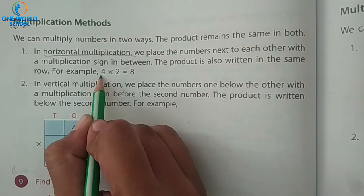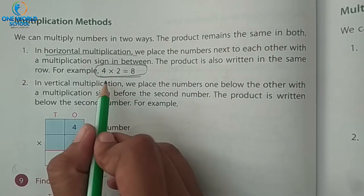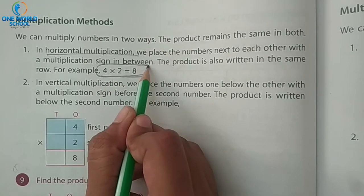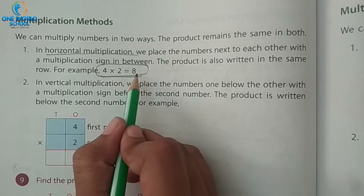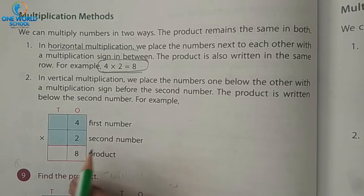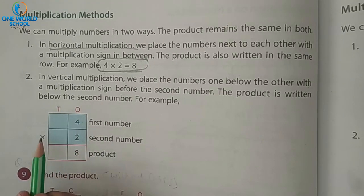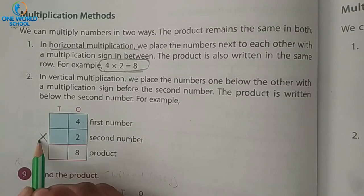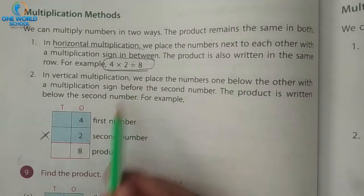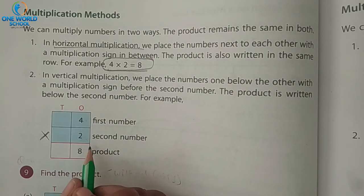Look here: 4 multiply by 2 — this is the horizontal way. Here, two numbers are next to each other and we write the answer directly: 4 twos are 8. And this is vertical multiplication, meaning we write it in a vertical way, with the first number and second number stacked, and a multiplication sign. 4 twos are 8. The answer is the same. So we can do multiplication with any of the two methods.